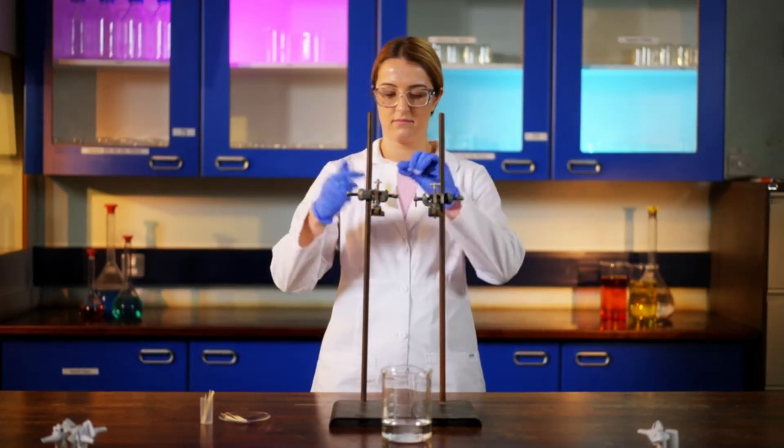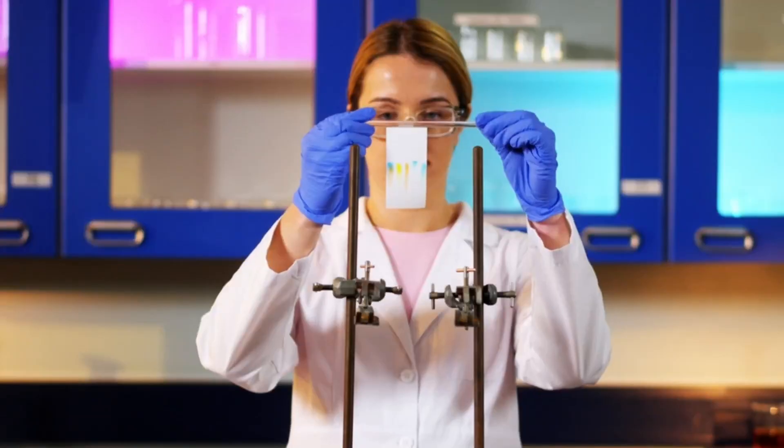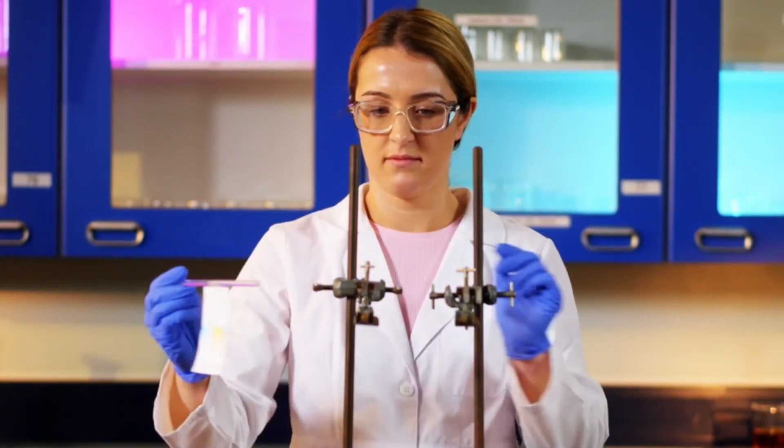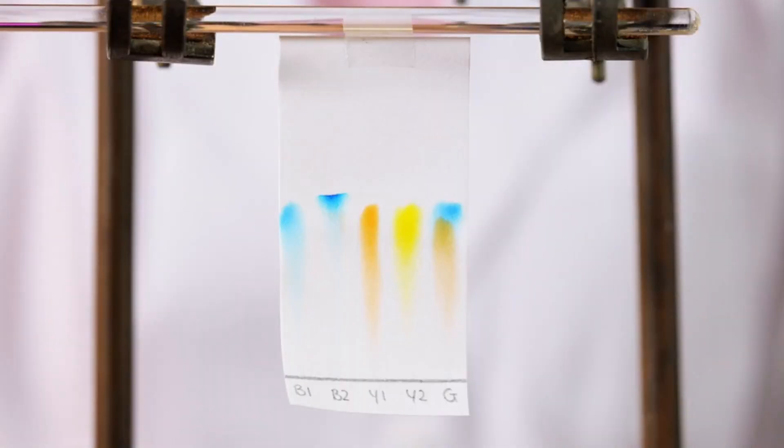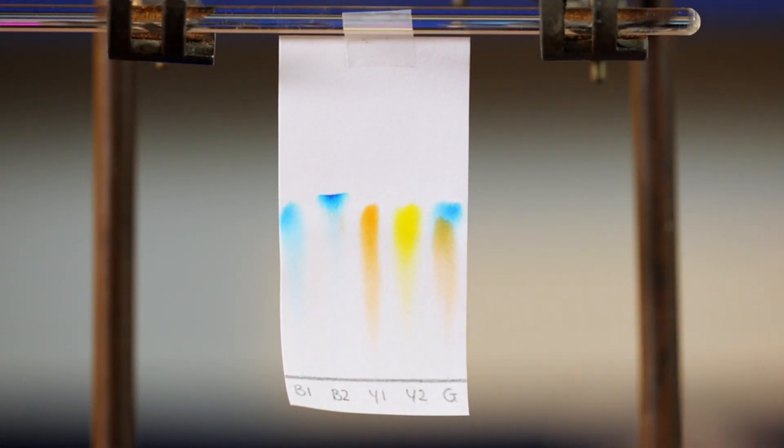This happens because some pigments are more soluble than others. The more soluble the pigment is, the longer it stays dissolved in the water and the further it travels up the paper. The yellow and blue food colorings each contain one pigment. They are pure substances.